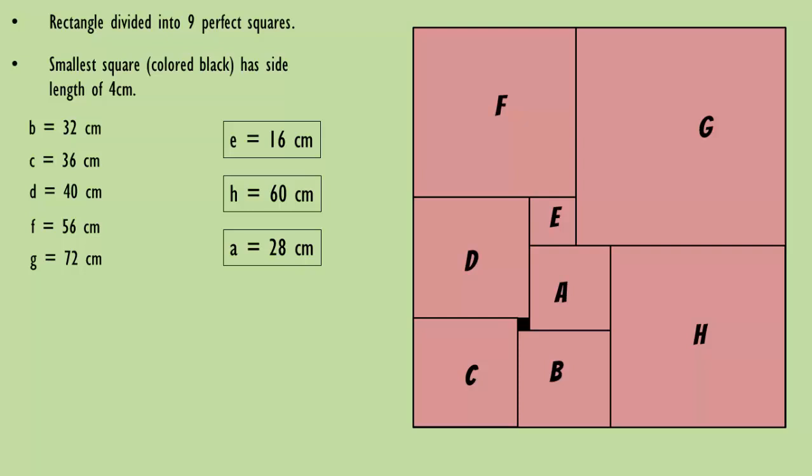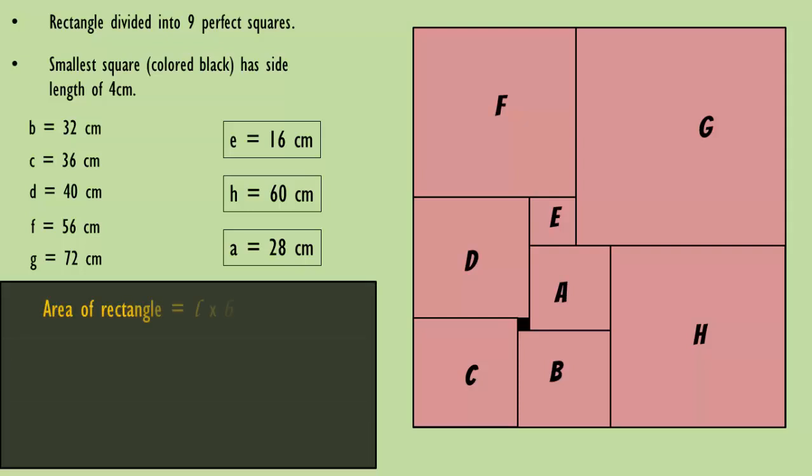And we can simply proceed with calculating the area of the rectangle. We can use any of the combinations of length into breadth. We get the answer as 16,896 square centimeters.